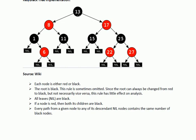Similarly, 17 is greater than 13 so it goes to the right. Adding 15: it is less than 17 and greater than 13, so it is placed on the left of 17. 25 is greater than 17, so right side. 22 is less than 25, so left side. 27 is greater than 25, so right side. Like this, whenever you add elements to the TreeMap, based on whether you implement the Comparator or Comparable interface and override the compare or compareTo method, the balanced red-black tree is created accordingly.